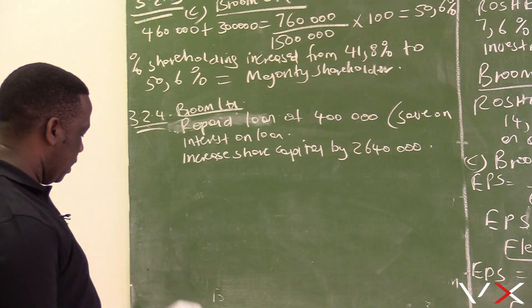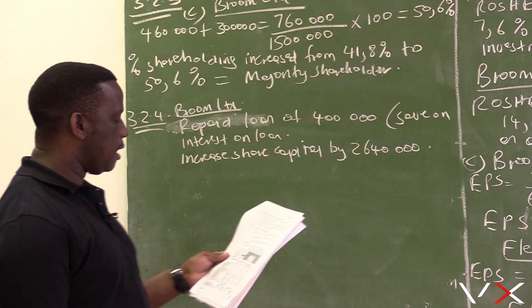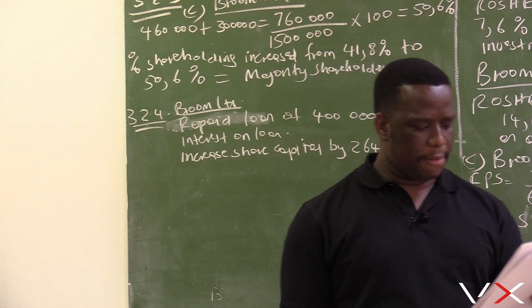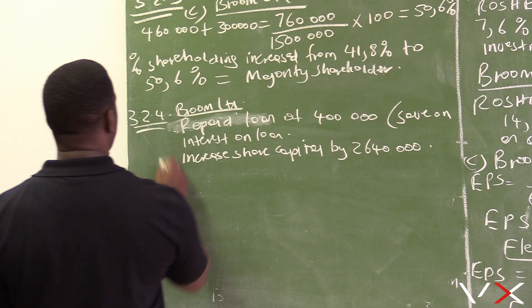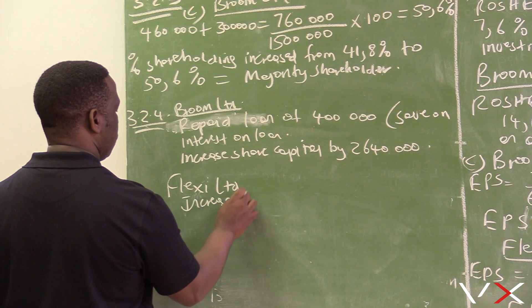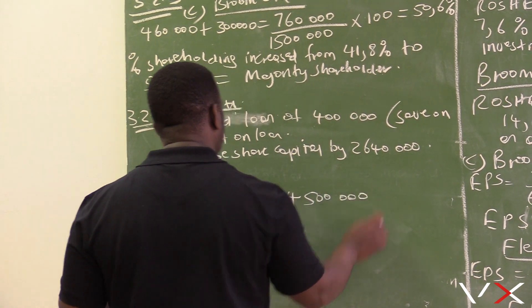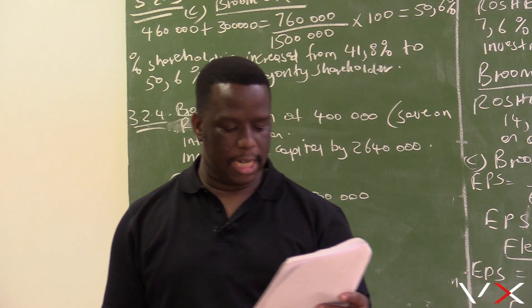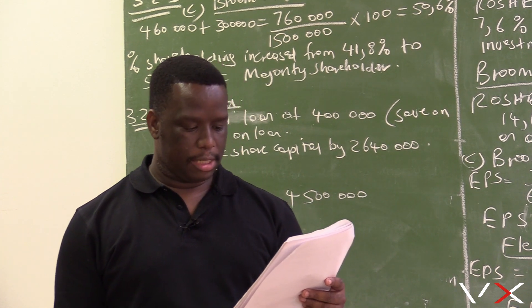They also purchased a fixed asset and increased the share capital by 2 million 640,000. Now let's look at the decisions by Flexi Ltd and how they affected the risk and gearing of the business. Flexi Ltd increased the loan by 4 million 500,000.